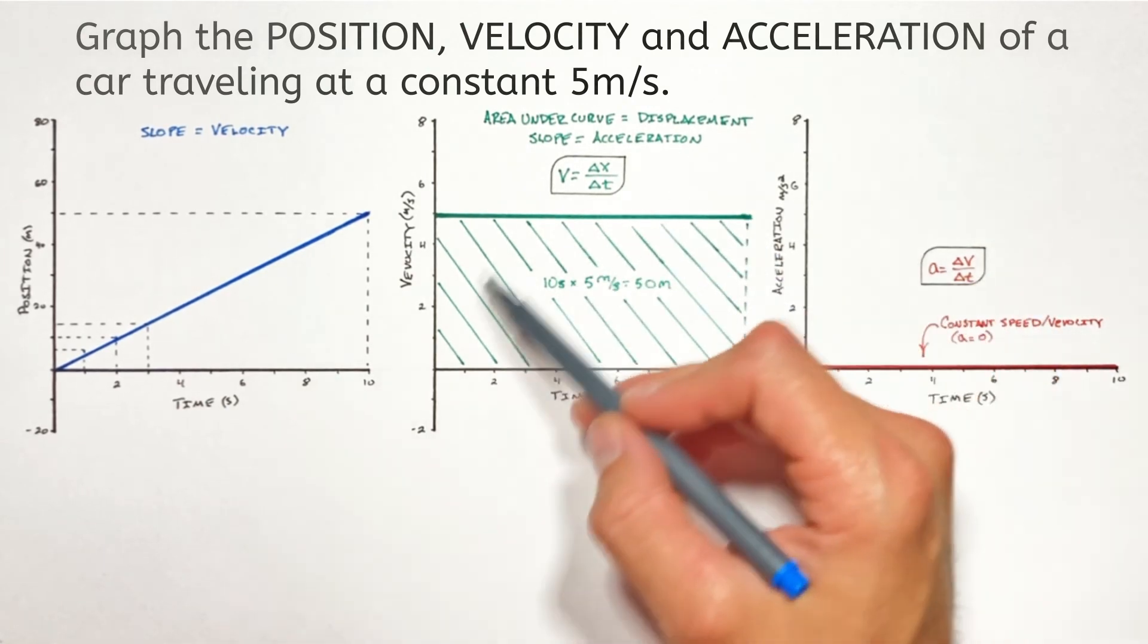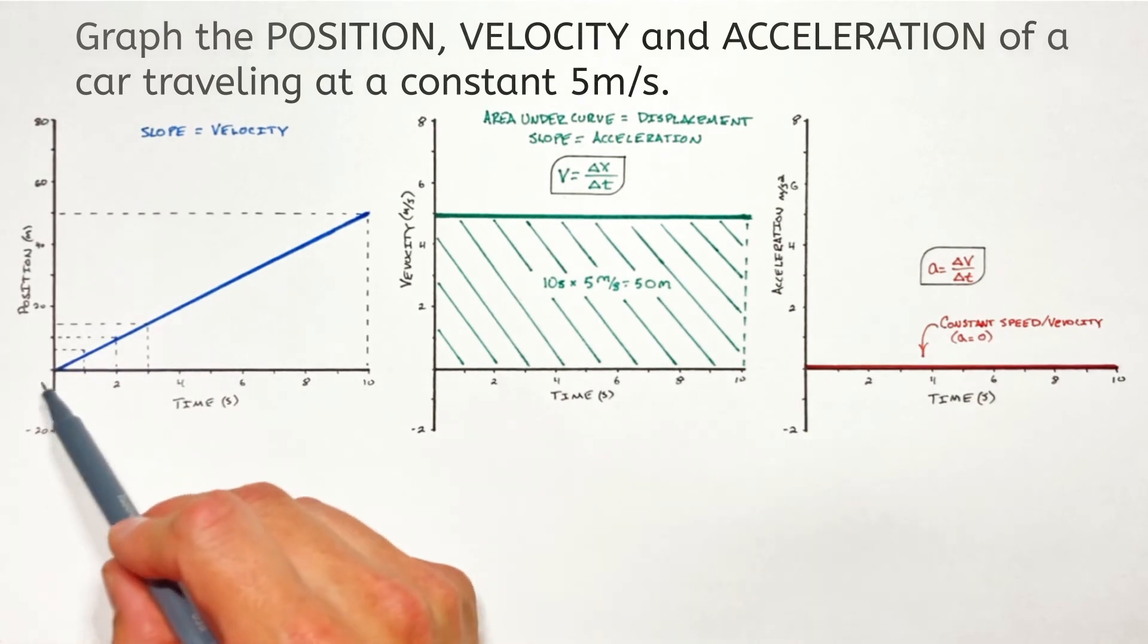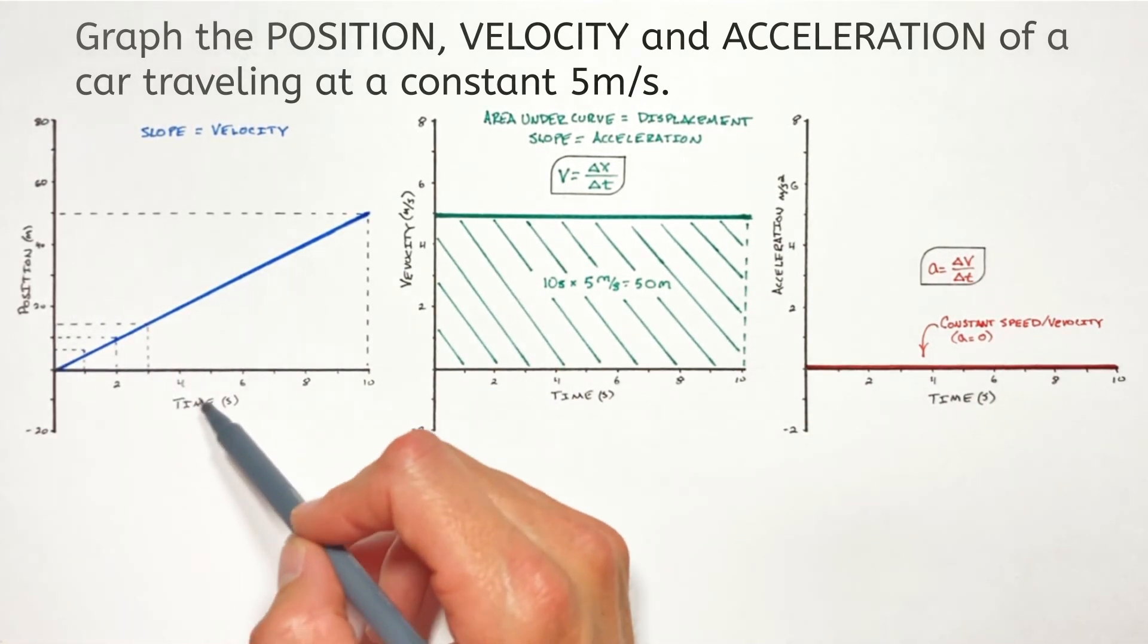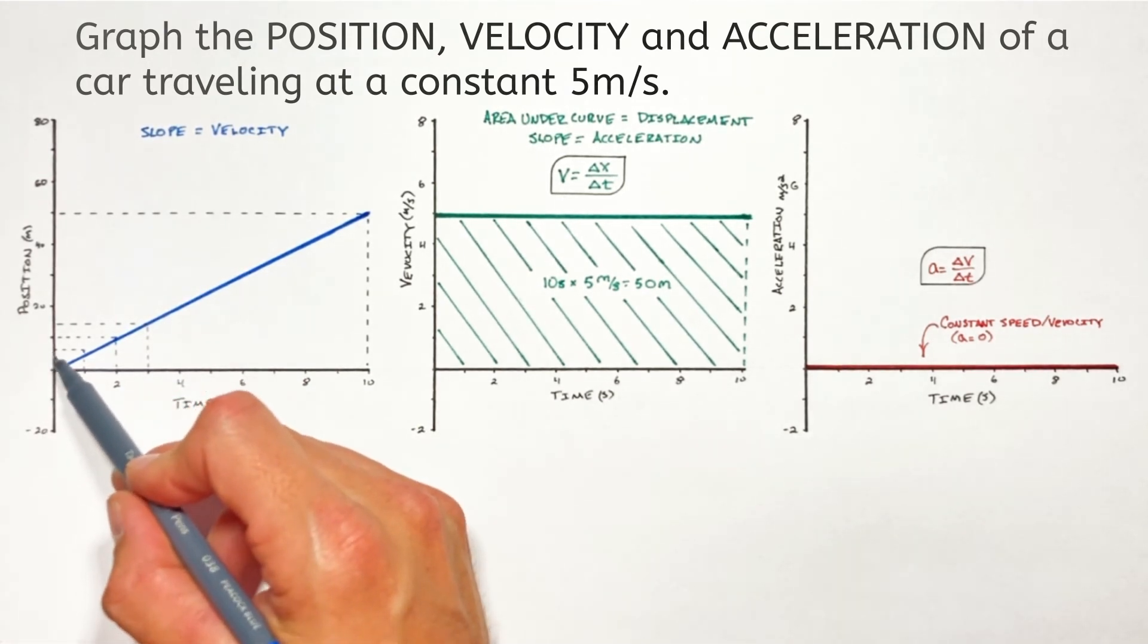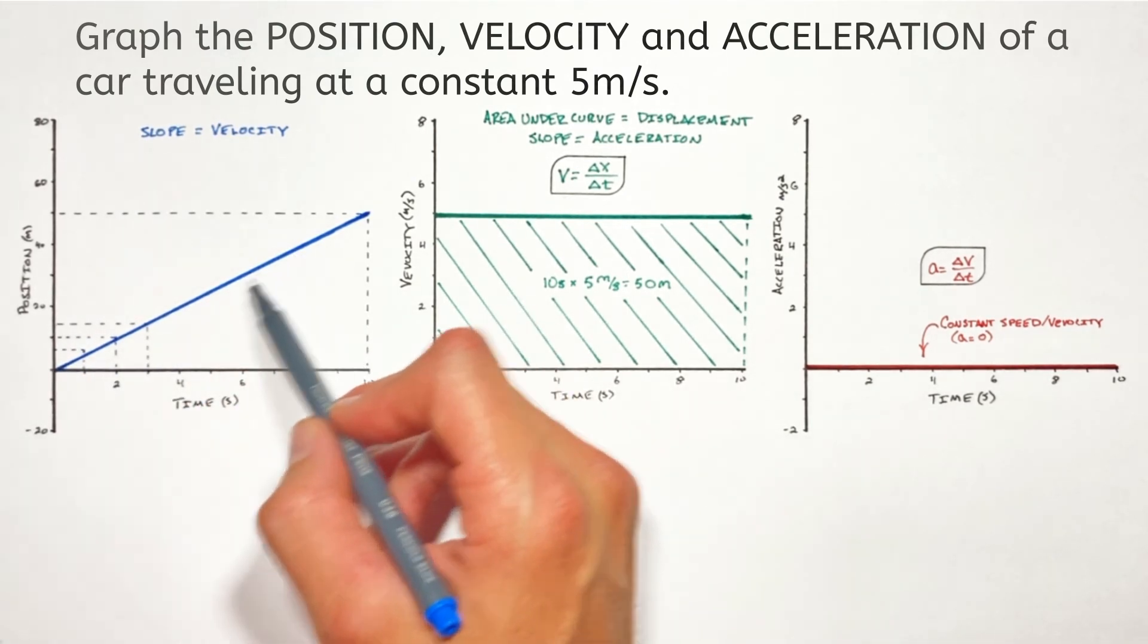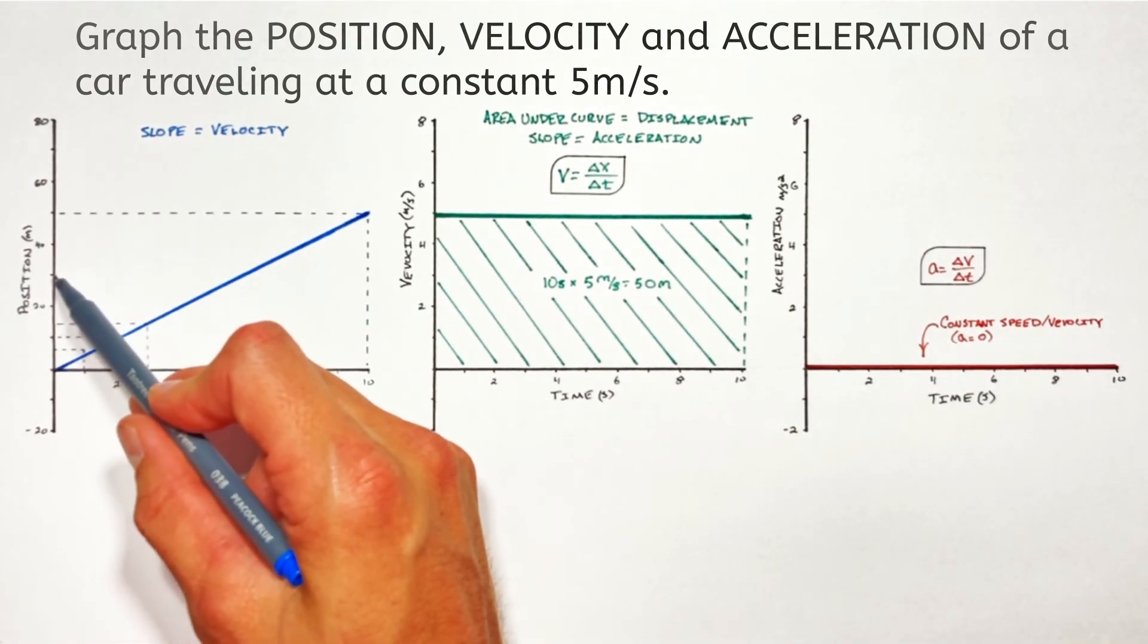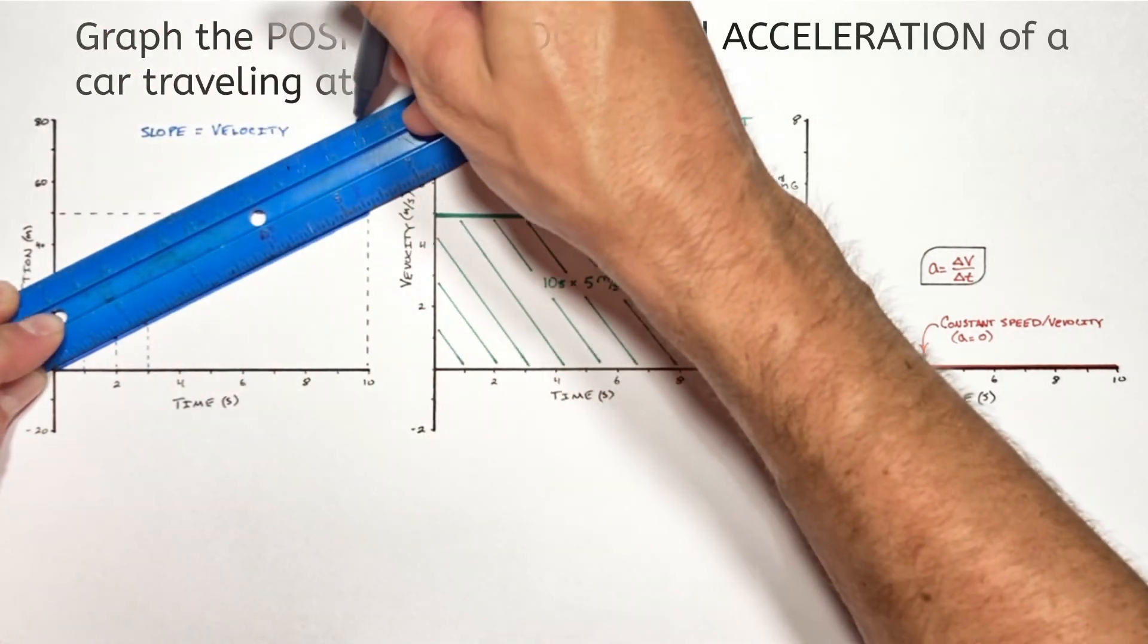Now you'll notice I said the area under the curve was equal to displacement, not position. And that's because we made one colossal assumption in graphing our position versus time for this car. We assumed the car started at a position of zero. But an object doesn't have to start at a position of zero. We could have just as easily graphed the position of this car as having initially started at, say, a position of 30. It's that initial position that we made an assumption about.